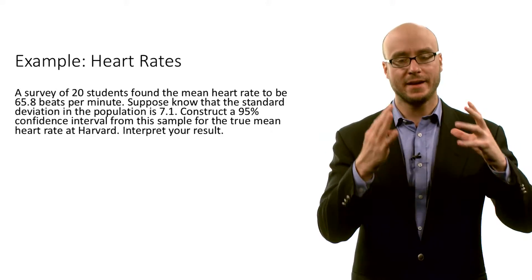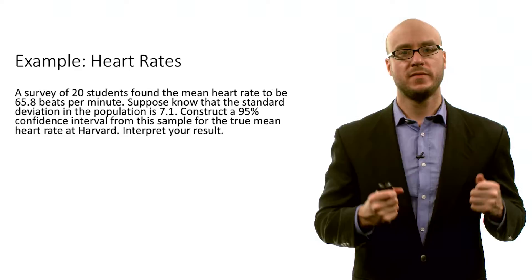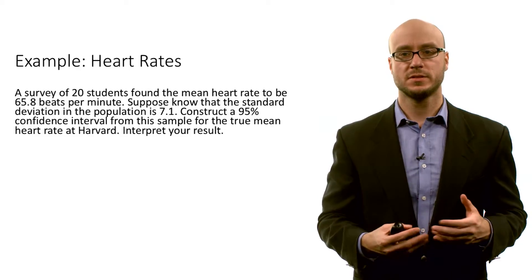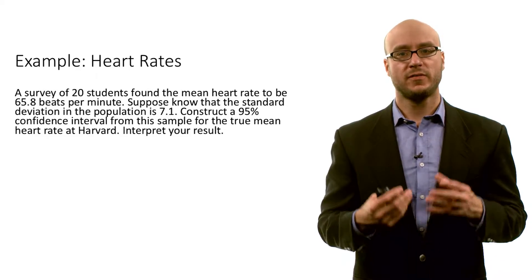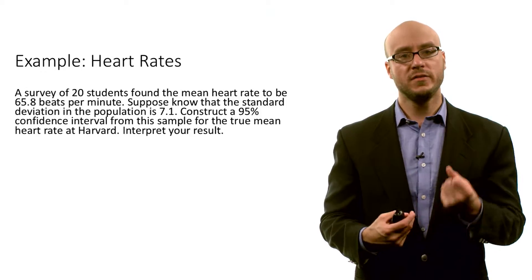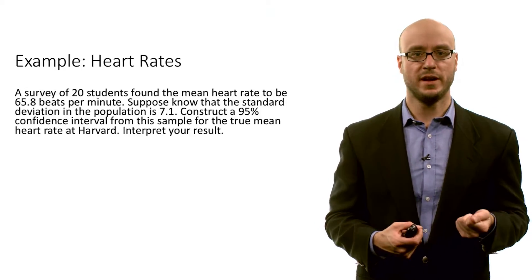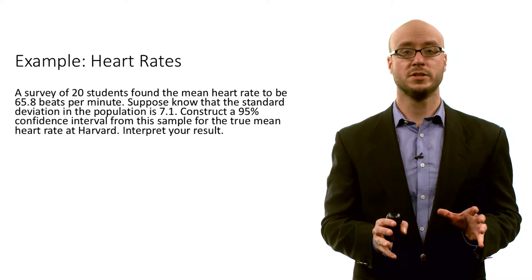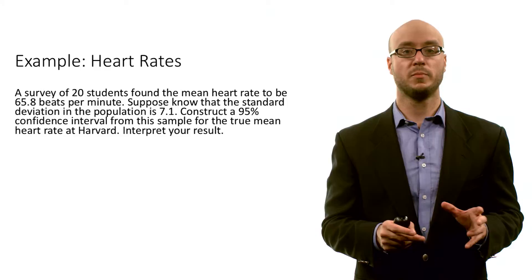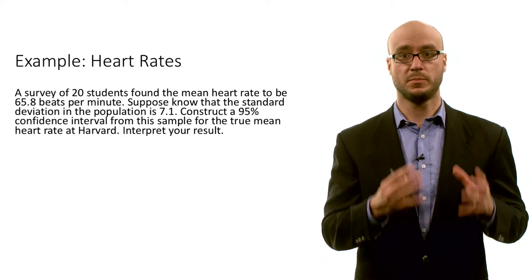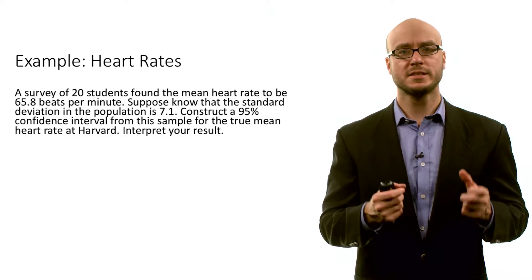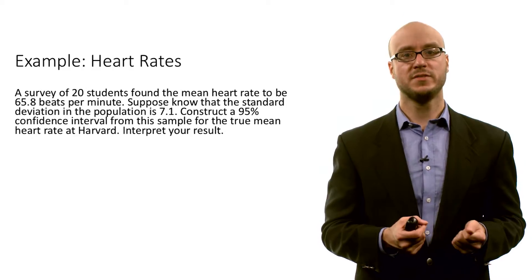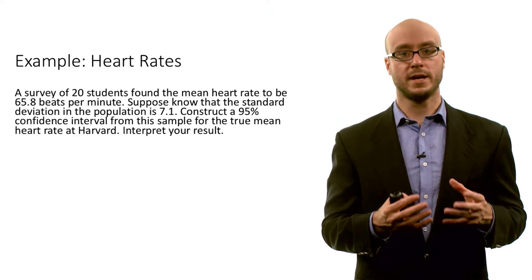Let's put all of this together about confidence intervals by looking at a few examples. Let's look at heart rates. Suppose we have a survey of 20 students — these students are randomly selected — and we find that the mean heart rate of this sample is 65.8 beats per minute. Suppose we know the standard deviation of the population is 7.1 beats per minute — that's our value of sigma, the population standard deviation. Let's construct a 95 percent confidence interval from the sample for the true mean heart rate.